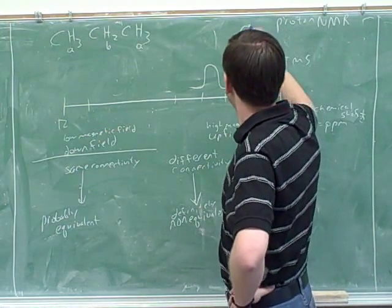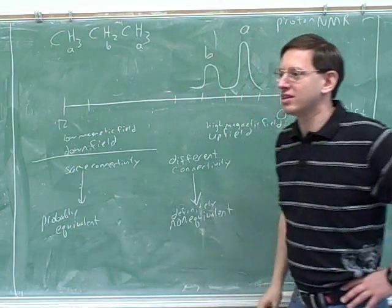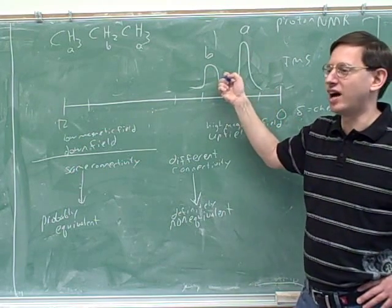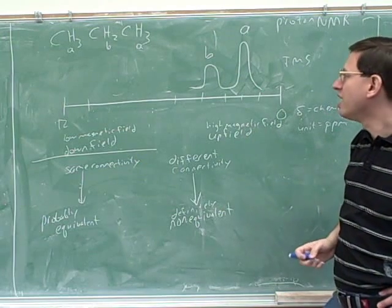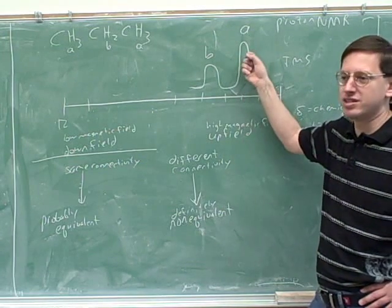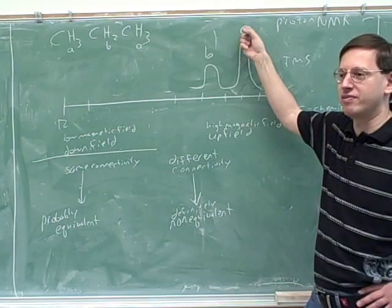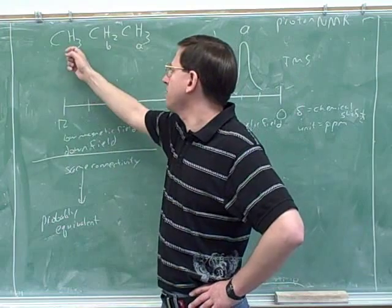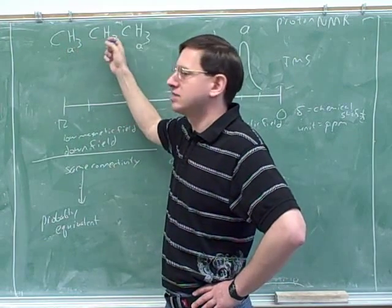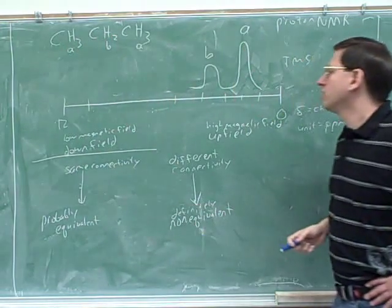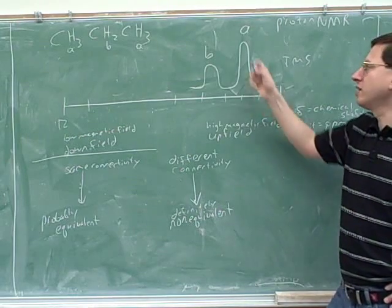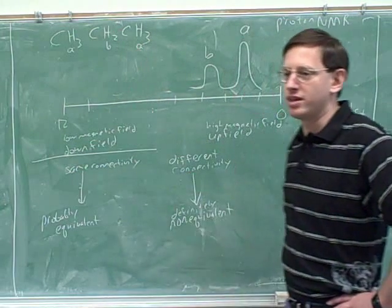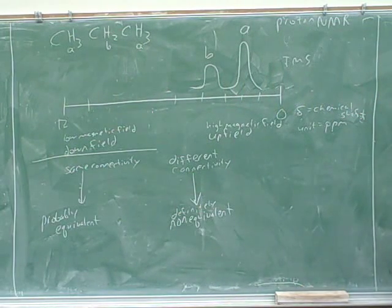The spectrum would show two different peaks. The height of each peak tells you how many hydrogens are behind it — this one is taller because there are more hydrogens here than over there. When you're working with a compound, you want to label the hydrogens, and when you're working with the spectrum, you try to assign a letter to each peak that corresponds to the labeled groups. That's the basic way you decipher what the spectrum means.